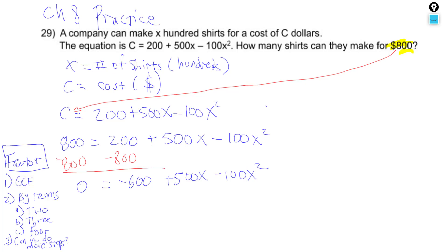The first thing to look for is anything that is common. Now, I see something common in all three of those numbers. 100 will divide into all three numbers. I also am noticing that the second power term is negative. My leader is negative. That makes factoring harder. So, what I'm going to do is factor out negative 100.